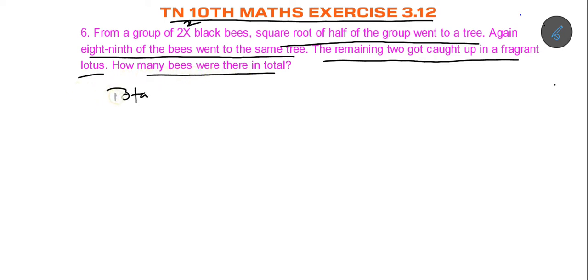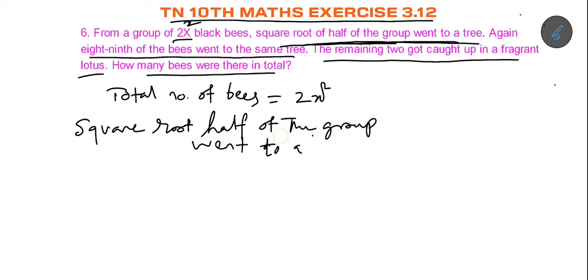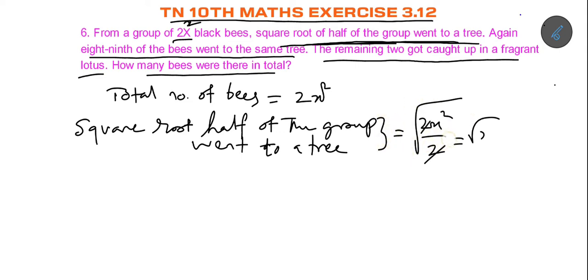So, the total number of bees is equal to 2x². The square root of half of the group went to a tree, so that is the square root of 2x² divided by 2, which gives us x.